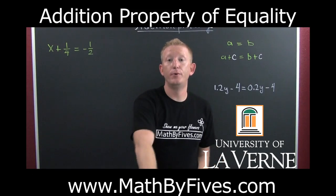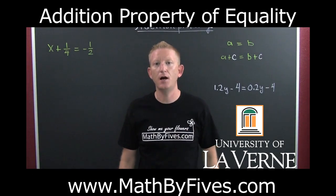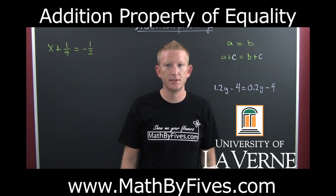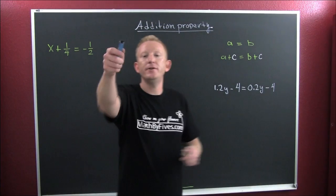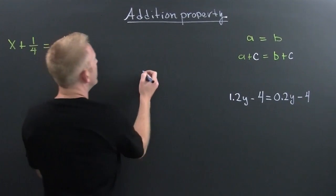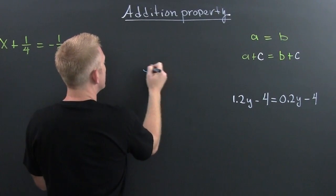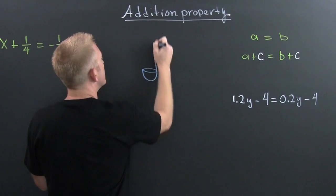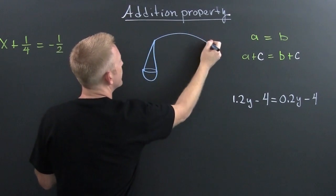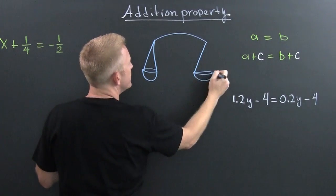The first property of equality is the addition property of equality. When you think of the addition property of equality, I want you to think of scales — like these old-school scales of justice.